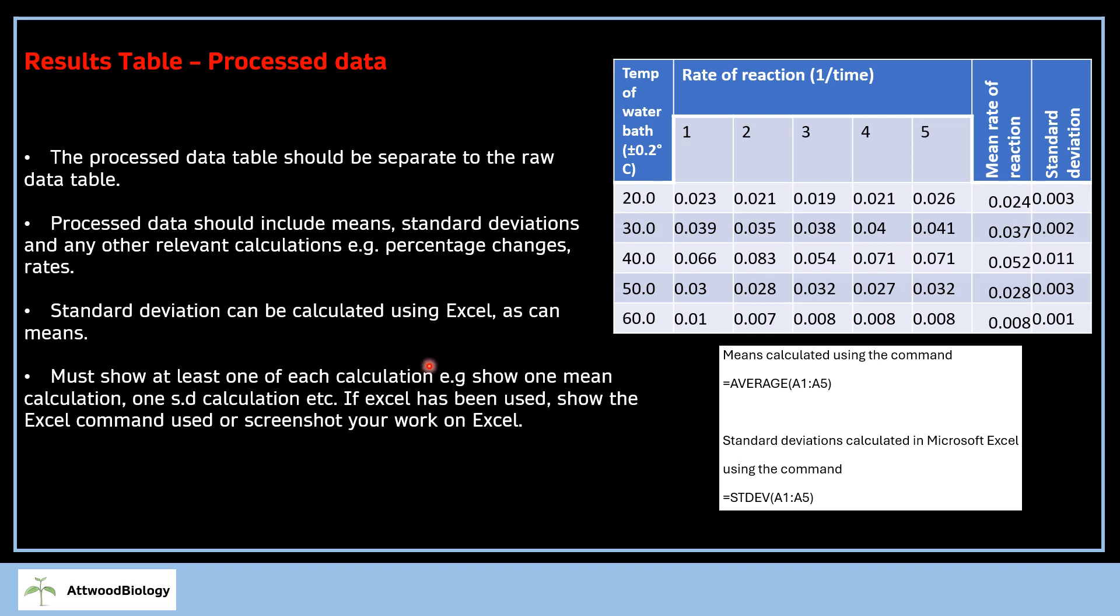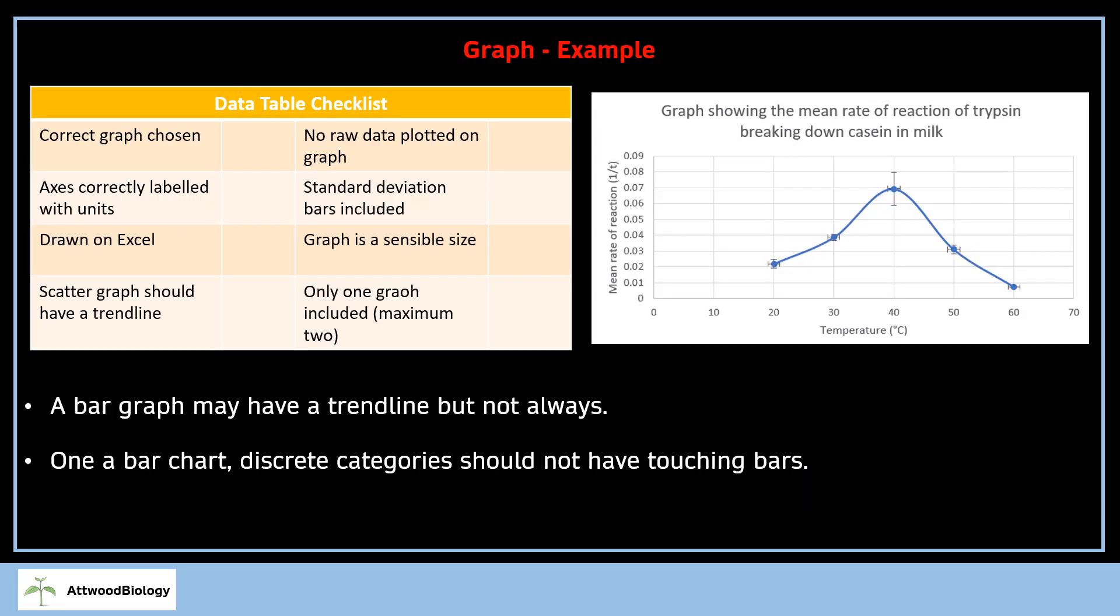Standard deviations and means can be calculated using Excel, but you must show some of the calculations. You can see at the bottom here I've shown the command used to calculate the mean and standard deviation. That's fine, that's enough. I've calculated rate of reaction as 1 over T here. Lots of IAs lend themselves to this rate of reaction calculation. You might have index of diversity calculations depending on what you've done. But you don't have to have this section—some processed data tables would just have a mean and standard deviation, and that's absolutely fine.